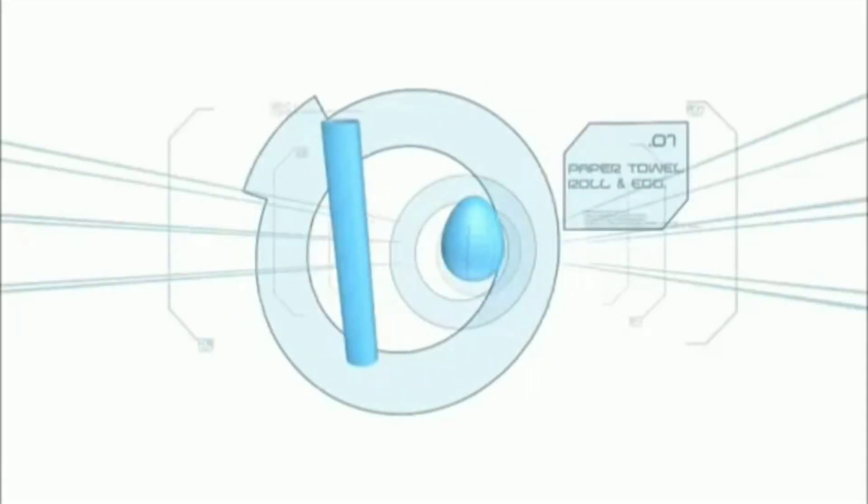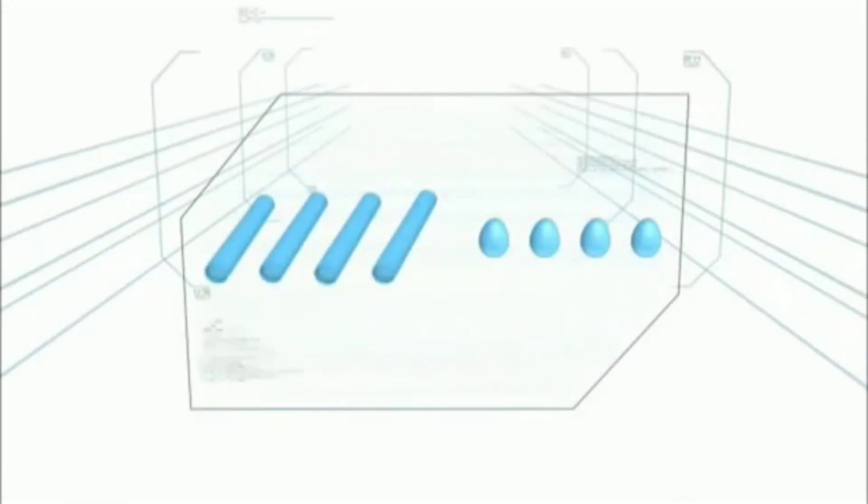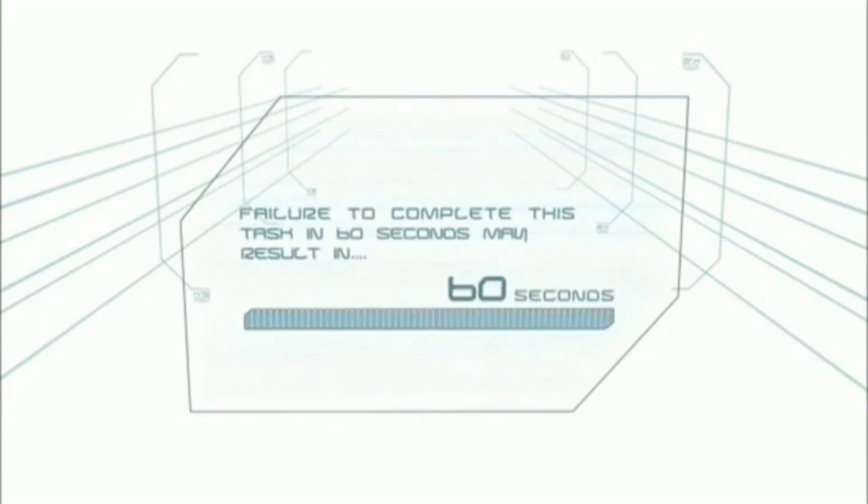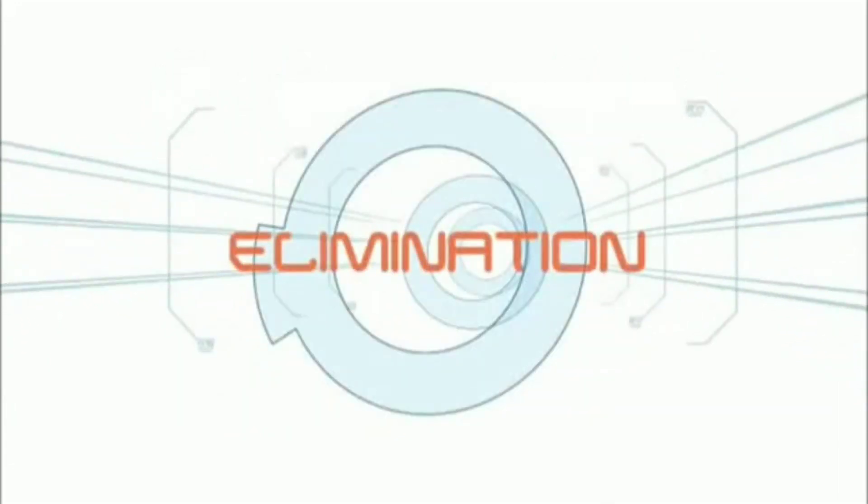In this challenge, the contestant must use four paper towel rolls and four raw eggs to construct a tower. Improper alignment will result in almost certain collapse. Failure to complete this task in 60 seconds may result in elimination.